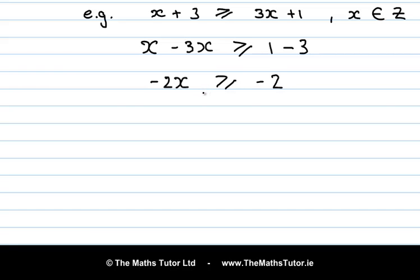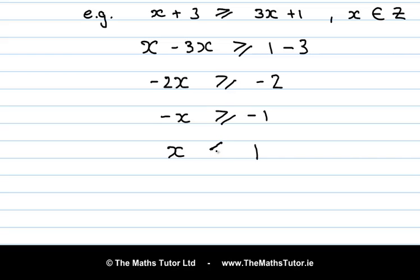We want to get x on its own — find out what x is greater than or equal to. So let's divide by 2, giving minus x greater than or equal to minus 1. But we want to know what plus x is, so we need to multiply across by minus 1. Minus 1 times minus x becomes x, and minus 1 times minus 1 becomes plus 1. This is the one extra rule we must remember when solving an inequality: when you multiply across by a minus, you must reverse the inequality. So instead of greater than or equal to, it becomes less than or equal to. Therefore x is less than or equal to 1.